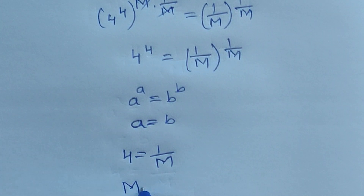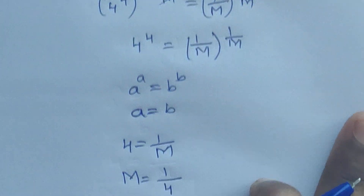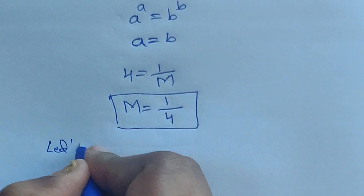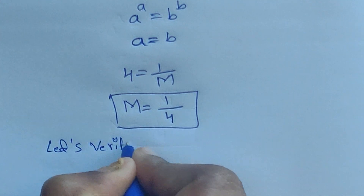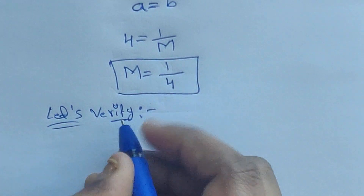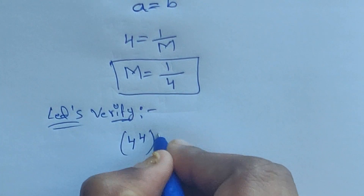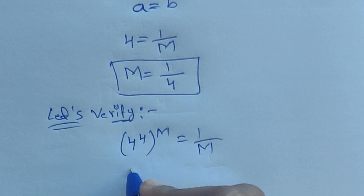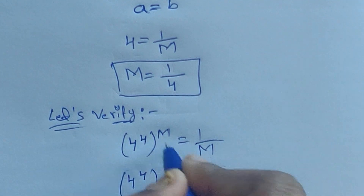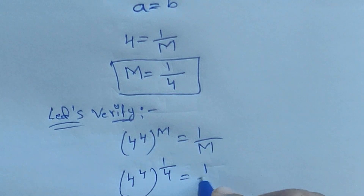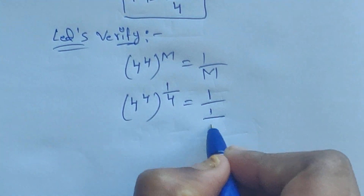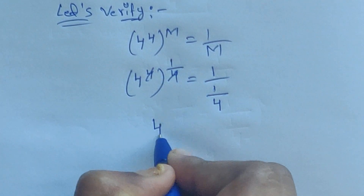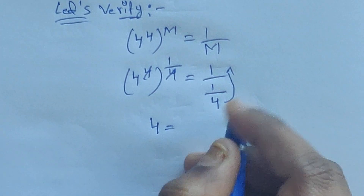So this is the m value. Let's verify. Put the m value in: 4 to the power of 4, whole to the power of m, where m equals 1 divided by 4, equals 1 divided by m. So 4 to the power of 4 times 1 divided by 4 equals 4 to the power of 1, which equals 4. The 4s cancel and we get 4 equals 4, confirming the answer.